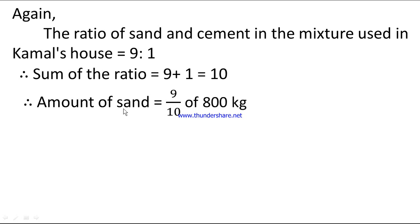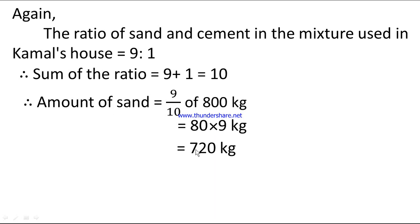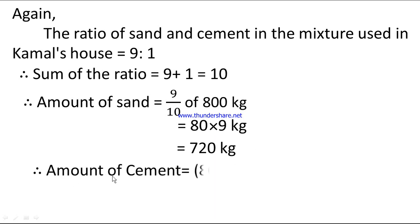Therefore, the amount of sand in Kamal's mixture = (9/10) × 800 kg. Dividing 800 by 10 gives 80, so the amount of sand = 80 × 9 = 720 kg. Therefore, the amount of cement = 800 − 720 = 80 kg.